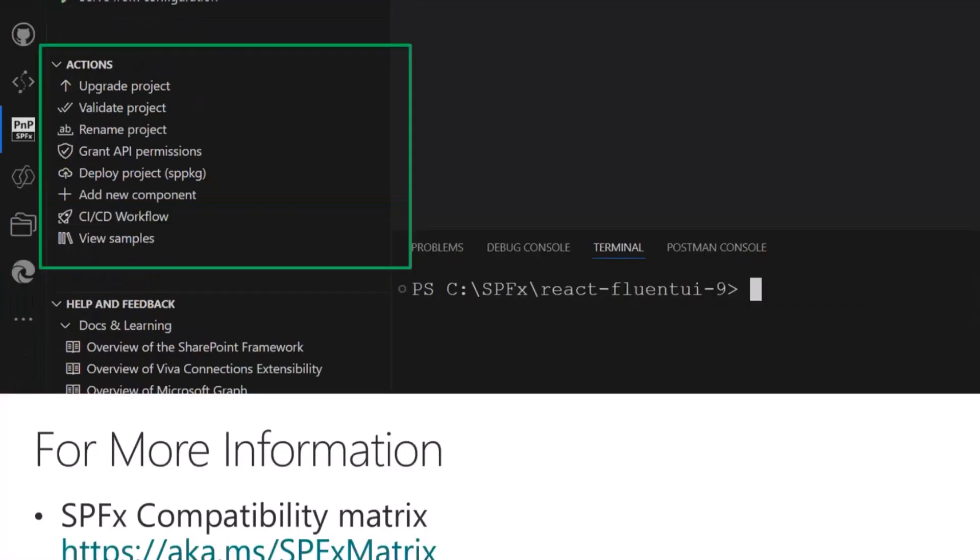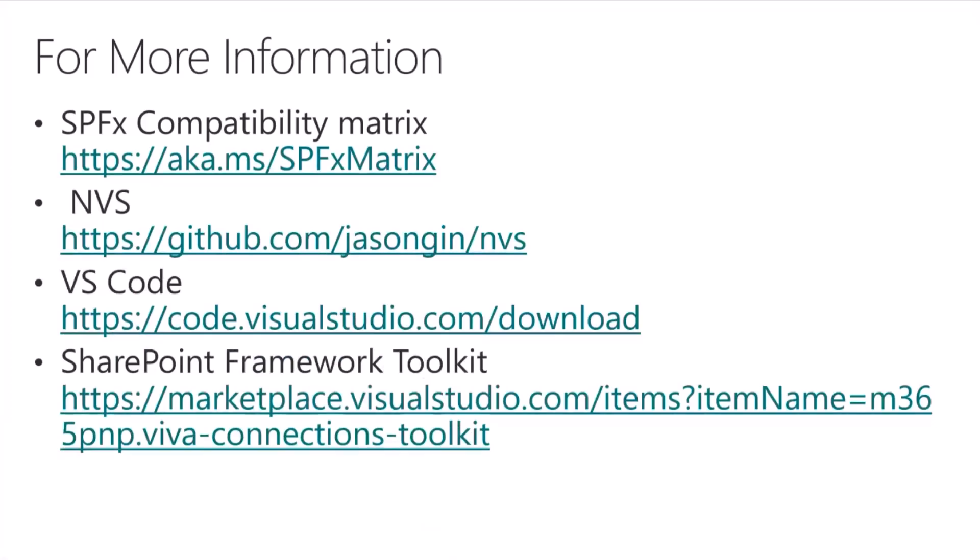To wrap up: today I've shown how you can configure your workstation by installing Node Version Switcher and Visual Studio Code, as well as the SharePoint Toolkit, to build web parts without any administrative permissions. In a later session we'll talk about handling npm and firewall rules that prevent downloading dependencies — but that's for another show.